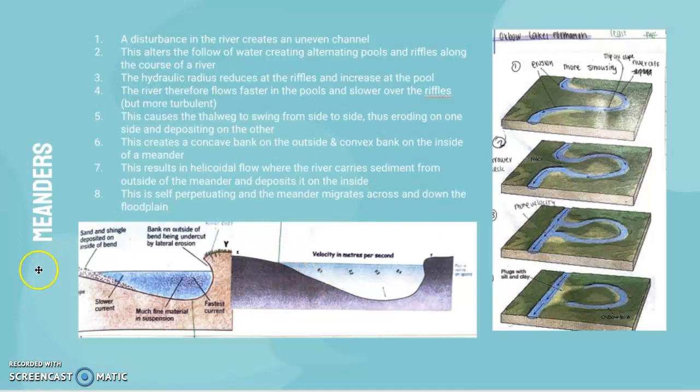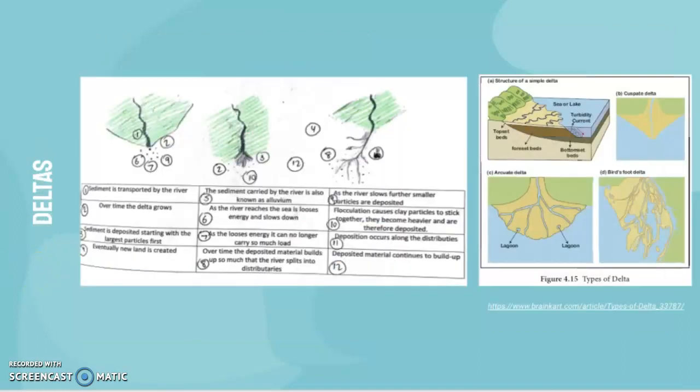Now we have a delta. Let's go step by step. First of all, sediment is transported by the river. Basically, deltas form at the mouth of the river. At the mouth of the river, the sediment is transported and then deposited.